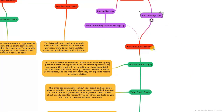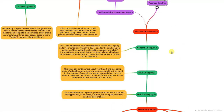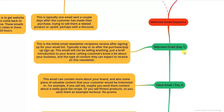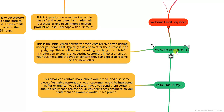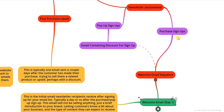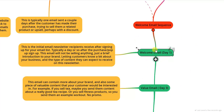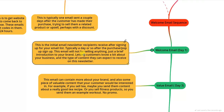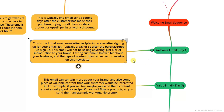Once they're on your newsletter, they'll enter the welcome email sequence, which is completely automated. The first part is the initial welcome email, sent on day one — about one day after somebody signs up to your email list. The welcome email is the initial email people receive after signing up and it's not going to be selling anything. It's more of a brief introduction to your brand, letting customers know about your business and the type of content they can expect.